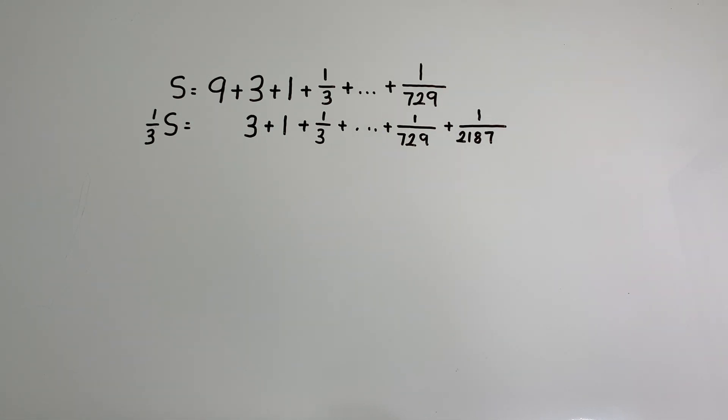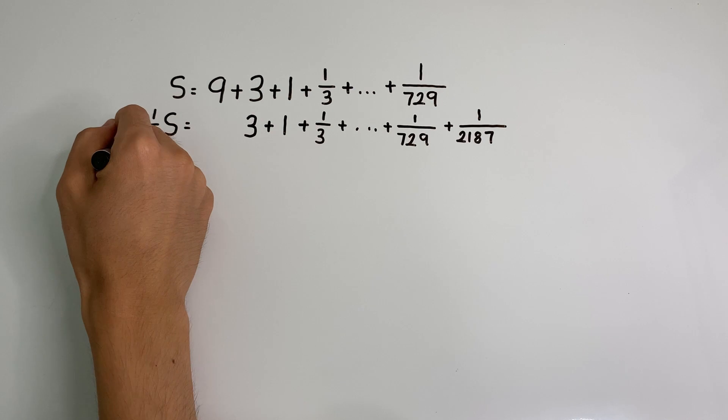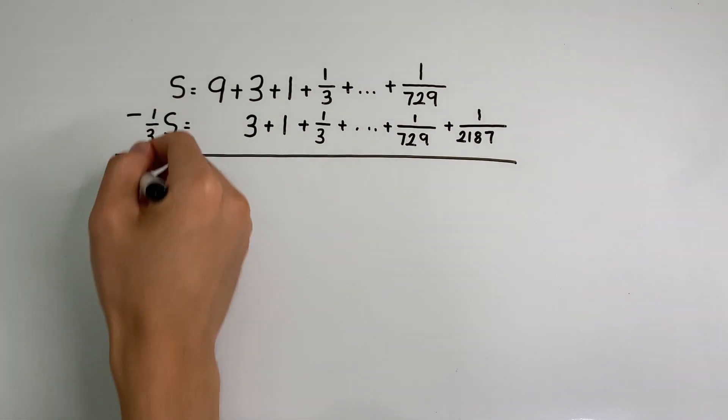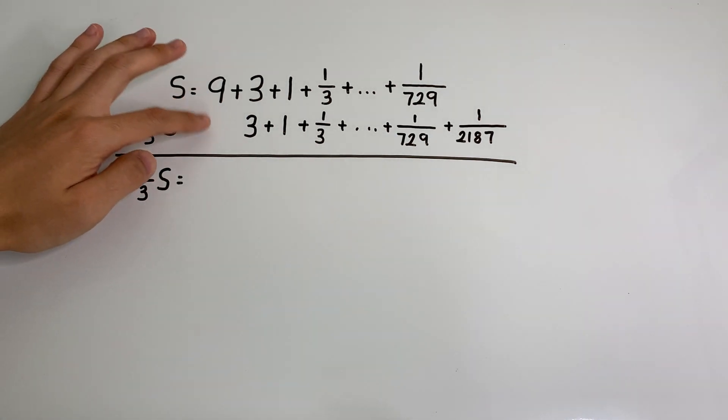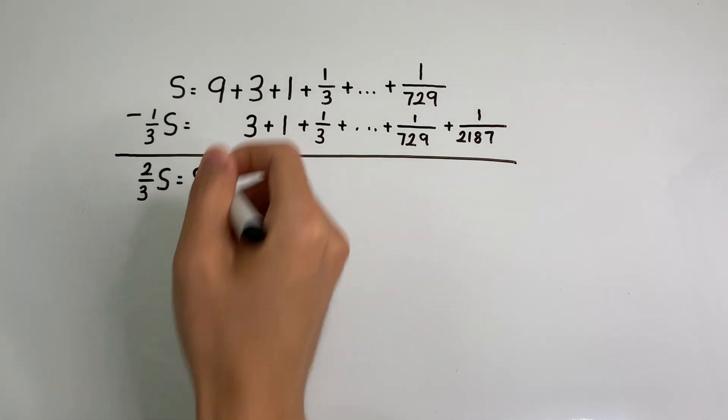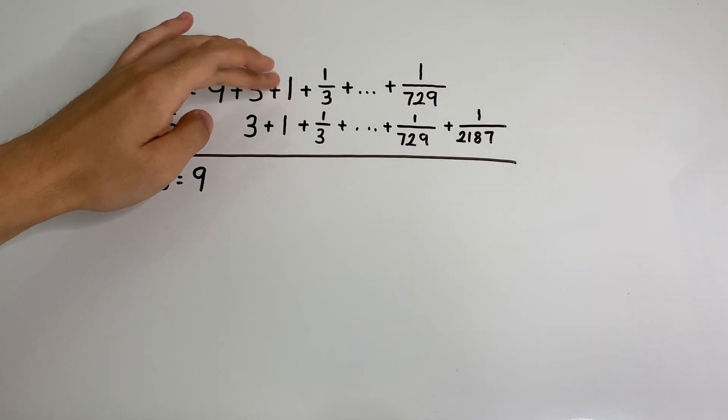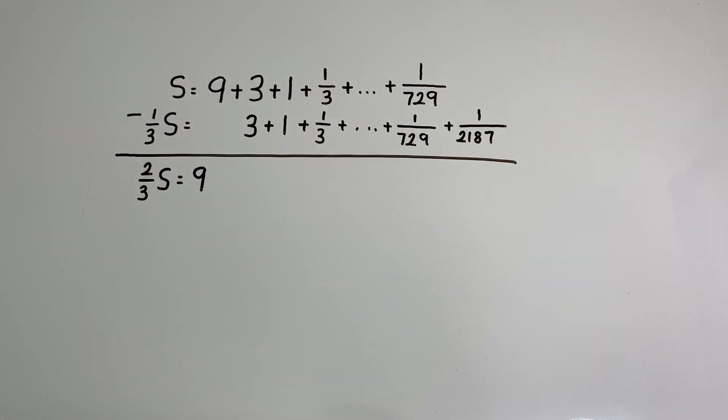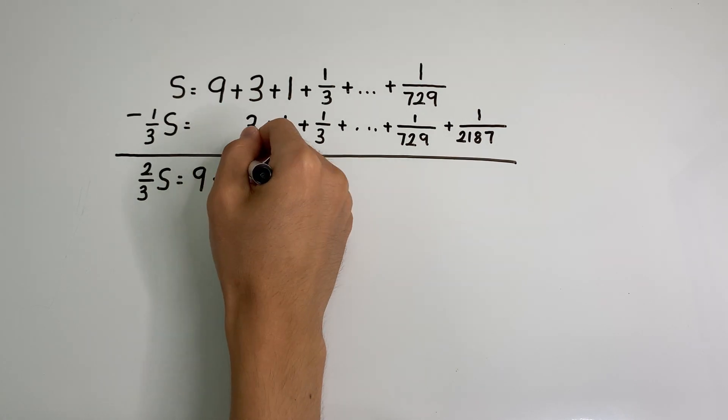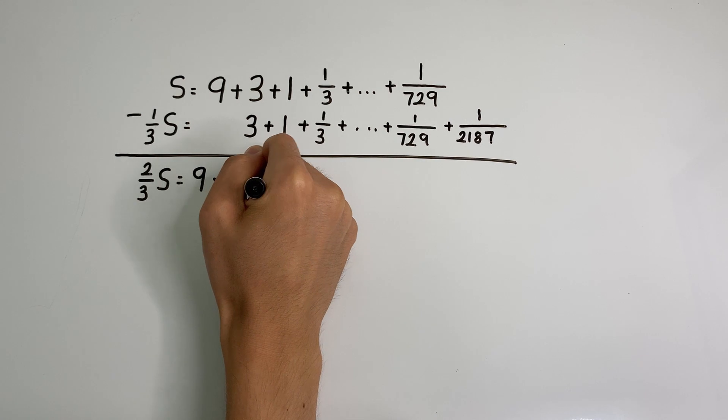And from here, we have the really familiar setup. Everything here goes away if we subtract the two series. So we're going to take S and subtract 1 thirds S. And what that leaves us is 2 thirds S equals 9 minus 0, that's just 9. But this time, 3 minus 3 is 0, 1 minus 1, 0, 1 over 3 minus 1 over 3, 0. So everything is 0 up to 1 over 729 minus 1 over 729, that is also 0. And we're just left with this term at the end over here.